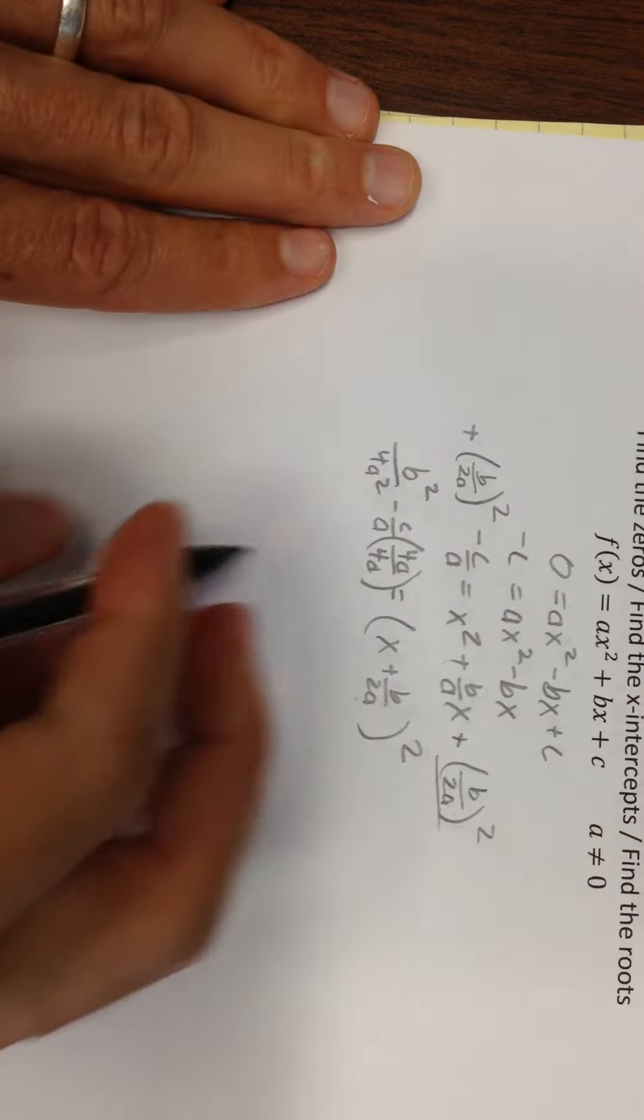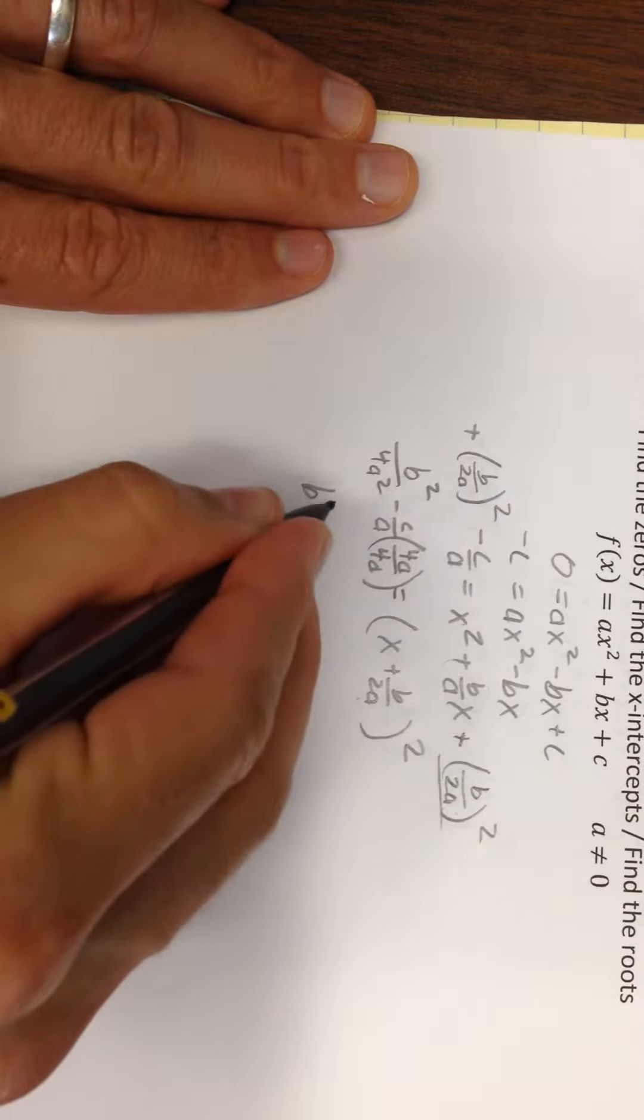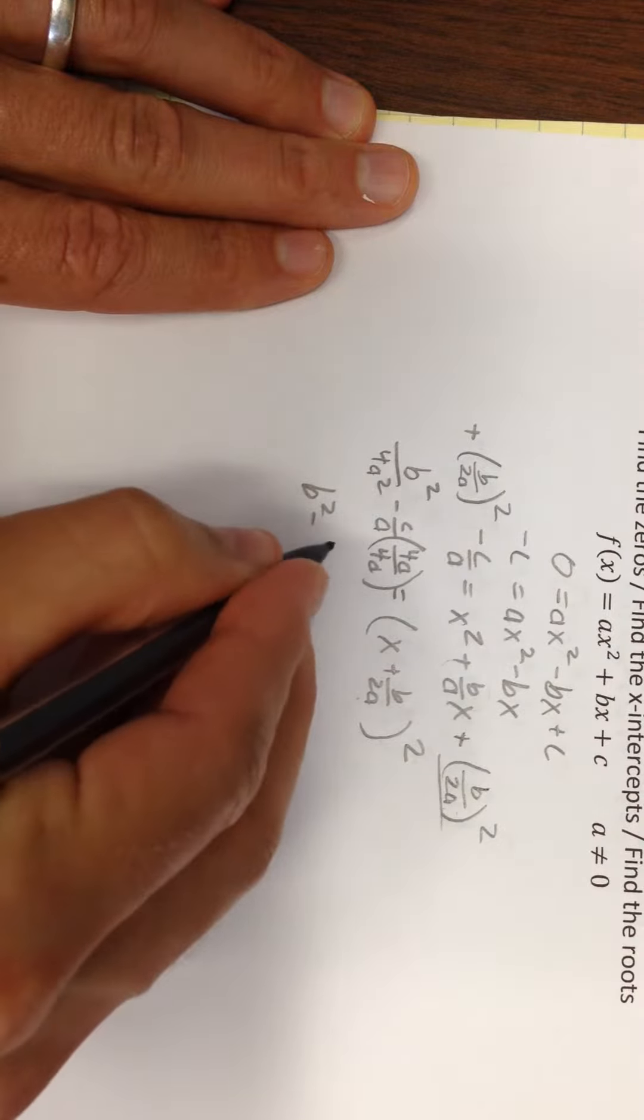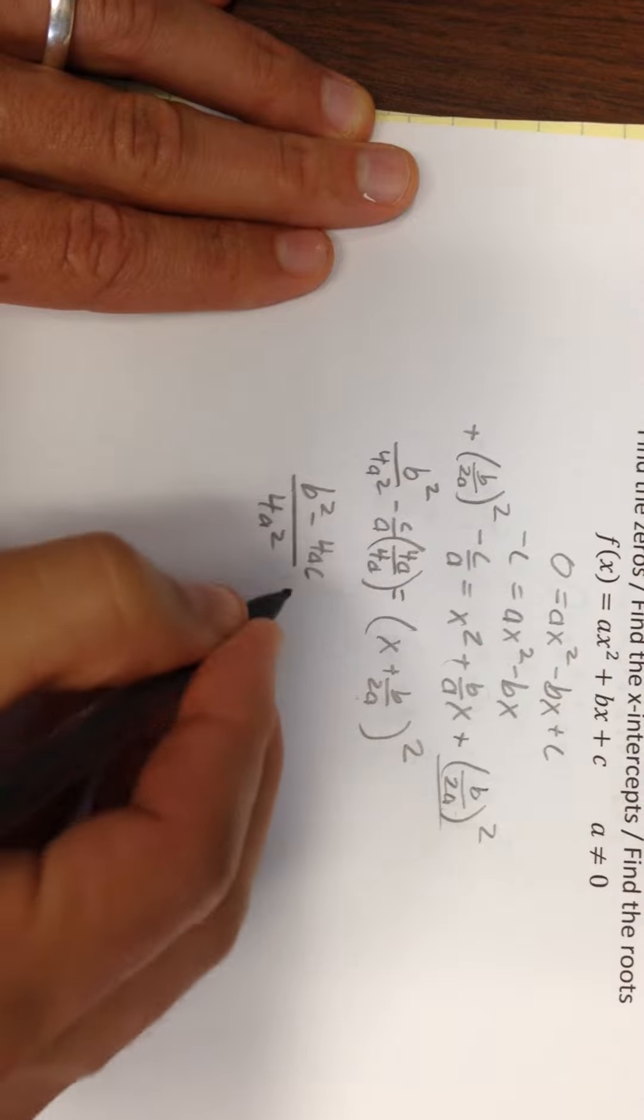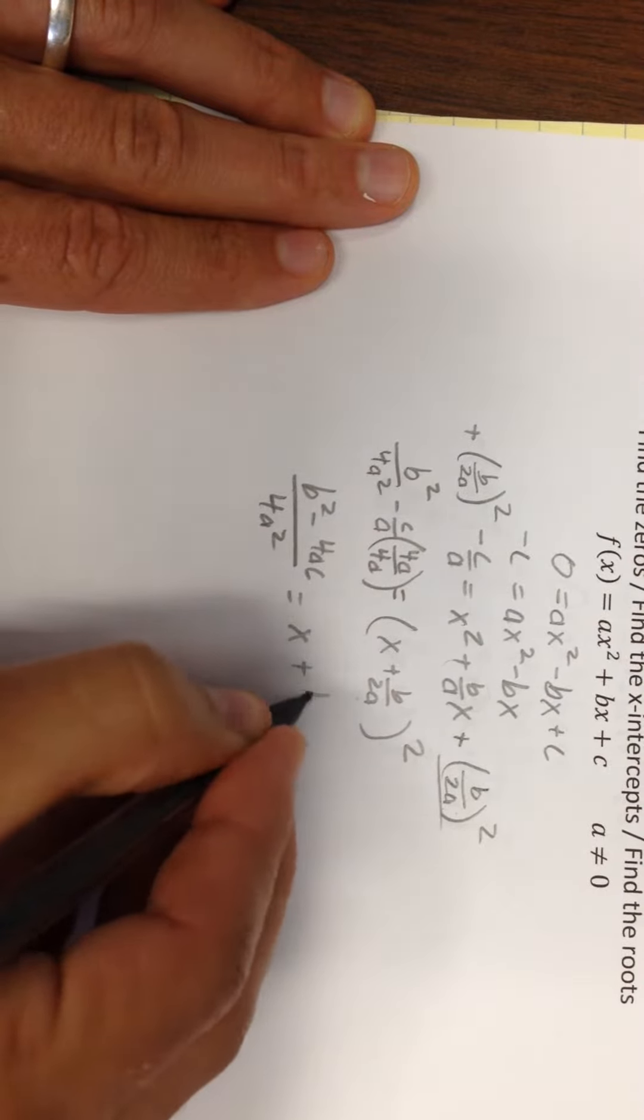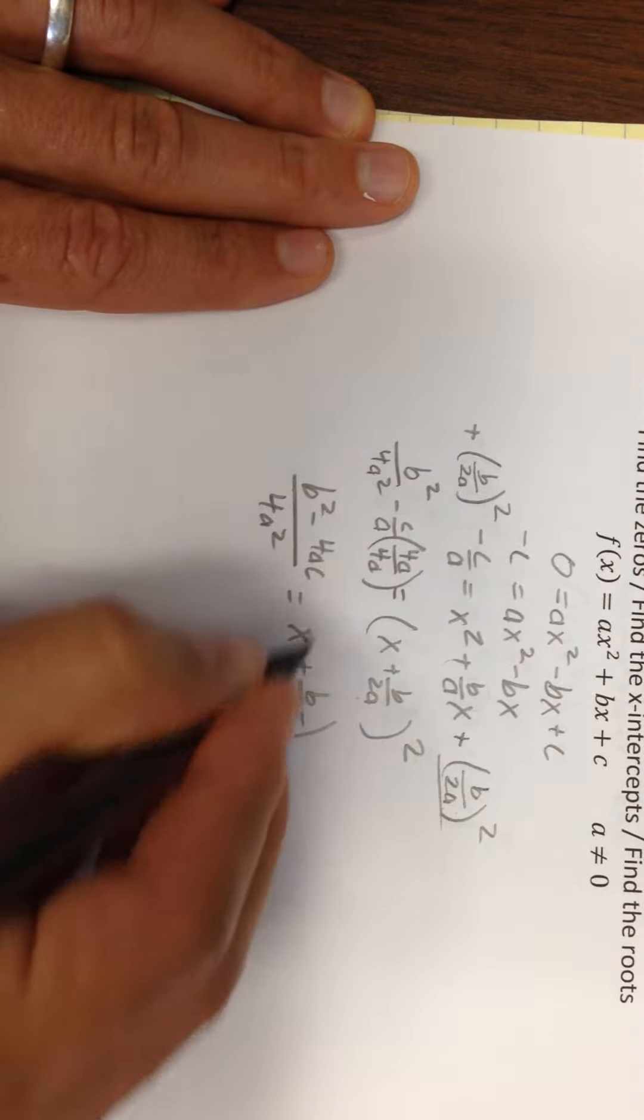So what I could do, I guess I could write this as (b² - 4ac)/4a² = (x + b/2a)².